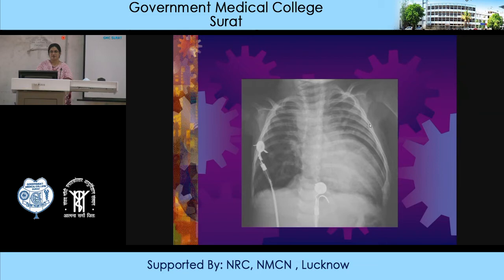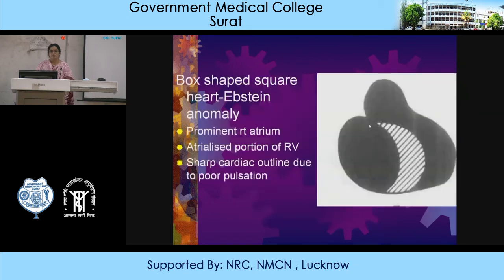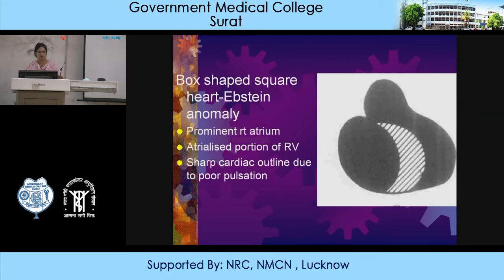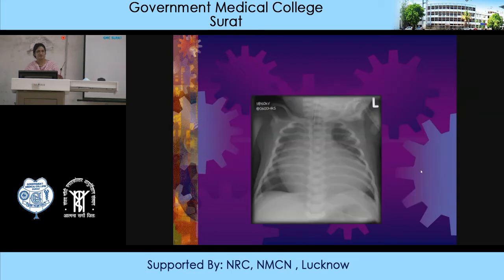A box-shaped or square heart is noted in Ebstein's anomaly, with a prominent right atrium, atrialized portion of the right ventricle, and a sharp cardiac outline because of poor pulsations of the heart.